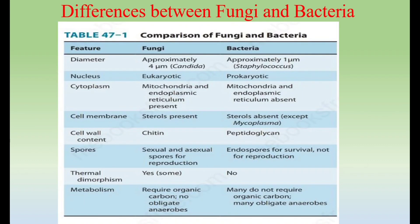The differences between fungi and bacteria: in terms of diameter, bacteria are smaller — approximately one micrometer — while fungi have a diameter of approximately four micrometers. Regarding nucleus, bacteria are prokaryotes and fungi are eukaryotes. In the cytoplasm, fungi contain mitochondria and endoplasmic reticulum because fungi are eukaryotes with all membrane-bound organelles present. In bacteria, which are prokaryotes, membrane-bound organelles are absent.